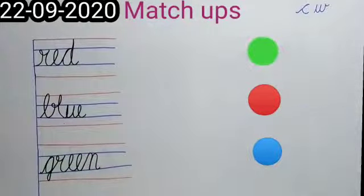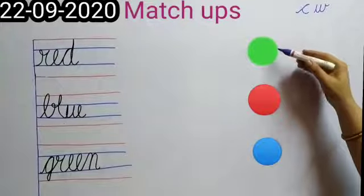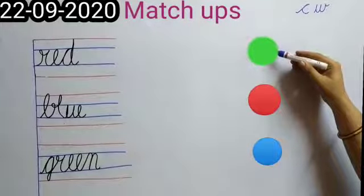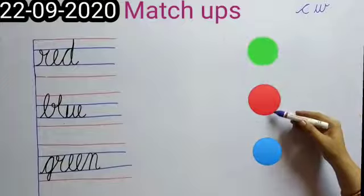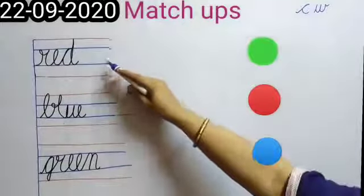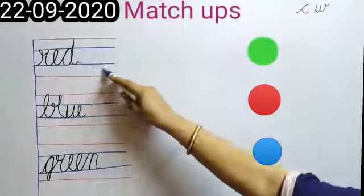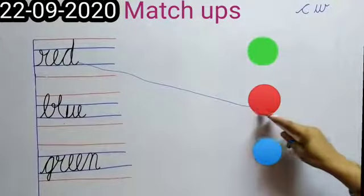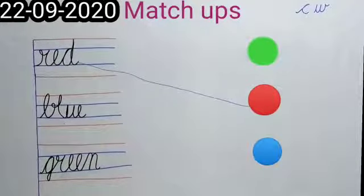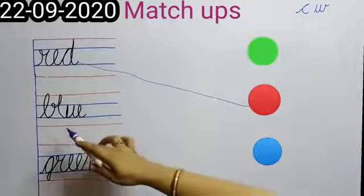See where red color is. Is this red color? No. Is this red color? Yes. All of you match red with red. Now read the spelling, which spelling is this?